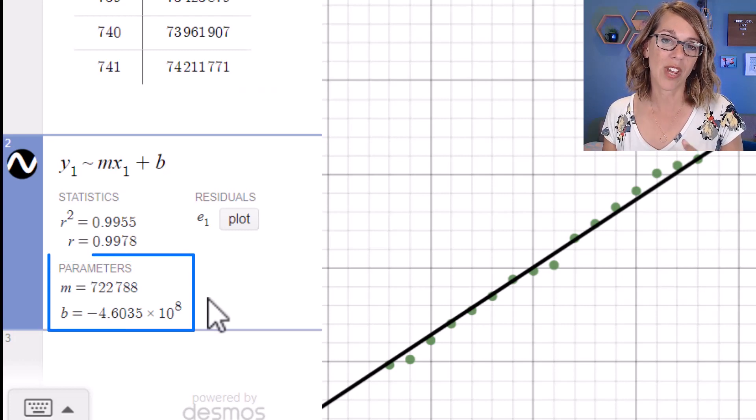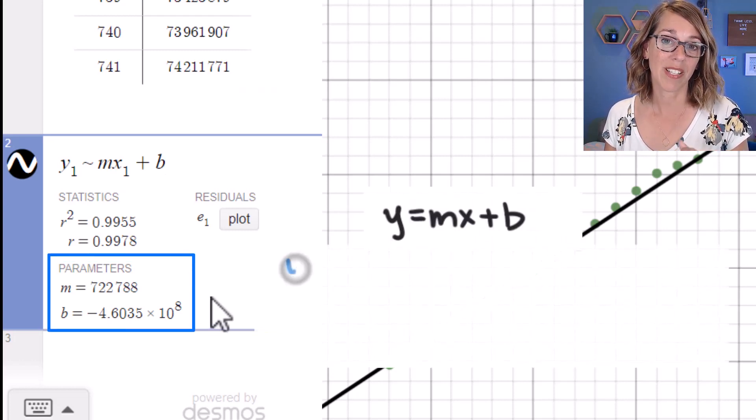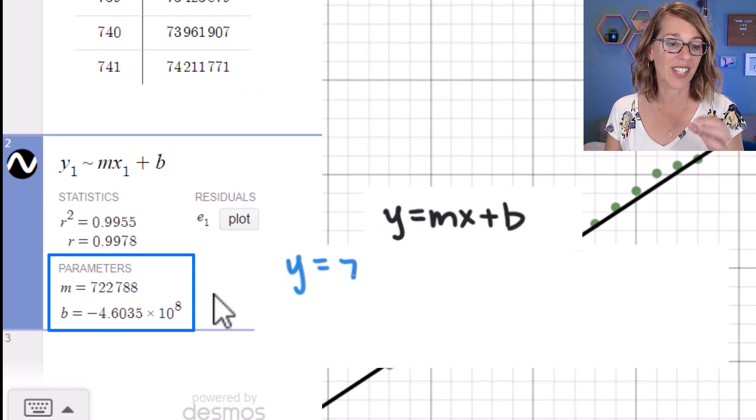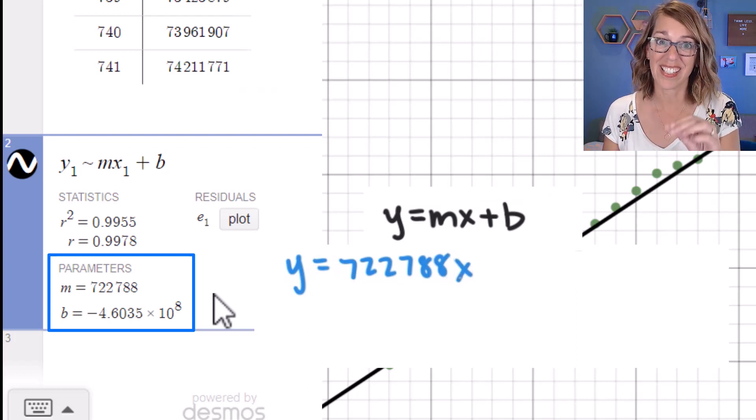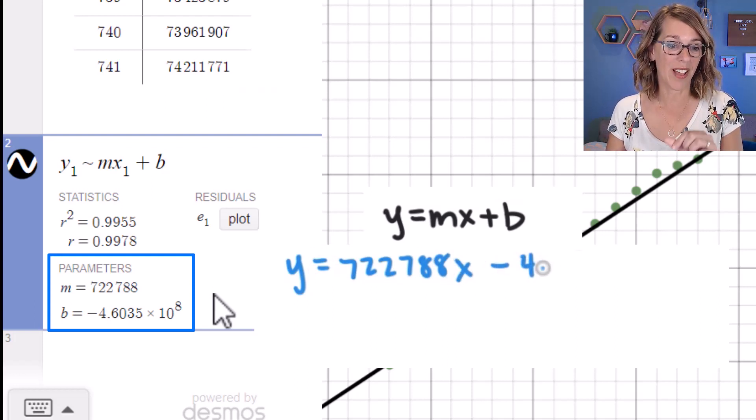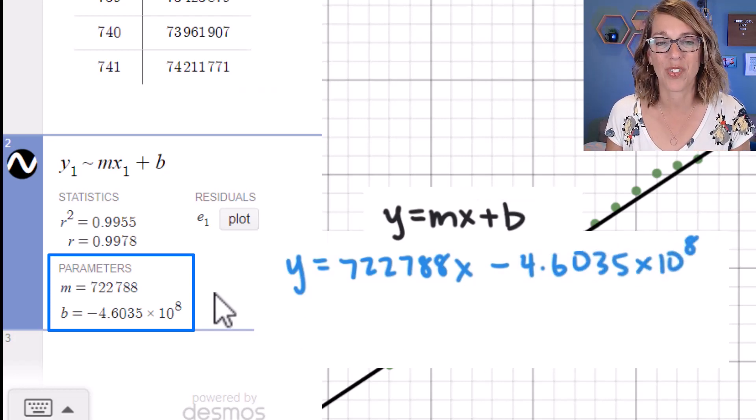I also have my parameters, which I can use for the equation of my best fit line. I can write that best fit line as y equals 722,788x minus my b value 4.6035 times 10 to the 8th, and you can write it in one of two ways.